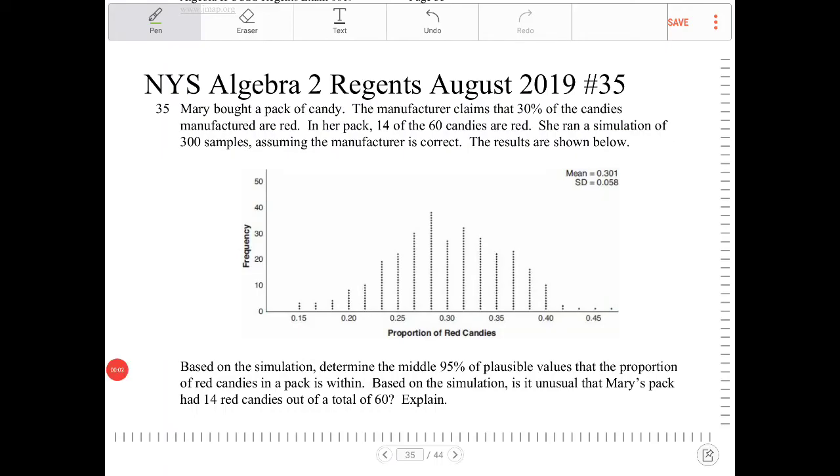Mary bought a pack of candy. The manufacturer claims 30% of the candies manufactured are red. In her pack, 14 of the 60 candies are red. She ran a simulation of 300 samples, assuming the manufacturer is correct. The results are shown below.